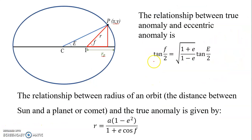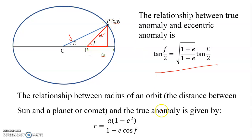The relationship between true anomaly F and eccentric anomaly is given by this equation. The relationship between radius R — which is the distance between the sun and a planet, or the center of mass and the other body — and the true anomaly F is given by this equation. So if we know the semi-major axis A, the eccentricity E, and the true anomaly F, we can find the distance of the body from the sun.